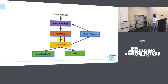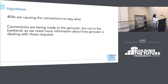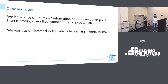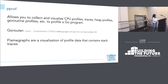We've ruled out route services. We need more information about what requests are actually going into the go router, and the go router's access logs can give us that. From the access logs we actually saw many 404s, and the 404 request time was much higher than that of other response codes. Our new hypothesis is that 404s are causing the connections to stay alive. All of our observations so far seem to be symptoms of a deeper problem, so we want to really dig into the 404s and see how go router itself is dealing with them. To help us dig into what the go router is doing, we can profile the code. A good tool for doing that is pprof.